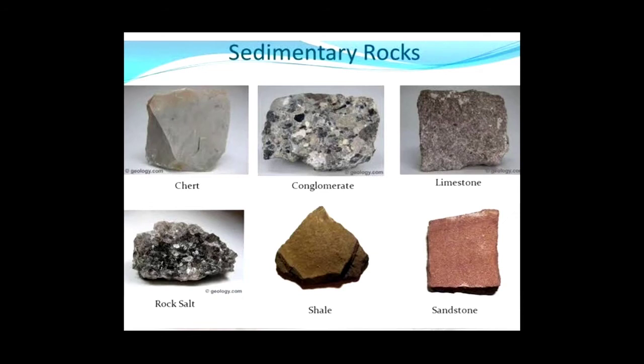Examples of sedimentary rocks include conglomerate, limestone, sandstone, shale, and rock salt. They vary in physical appearance because they formed in different circumstances, but they are all formed of sediments. They also vary in chemical composition because each rock — conglomerate, limestone, and others — differs in mineral content and physical properties.